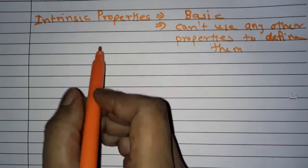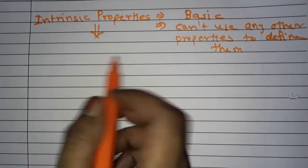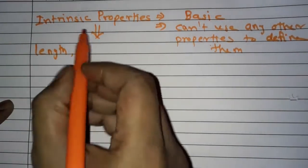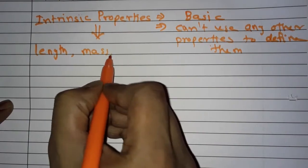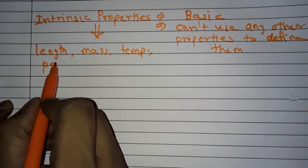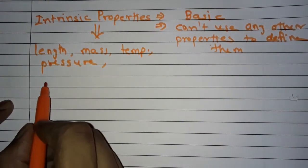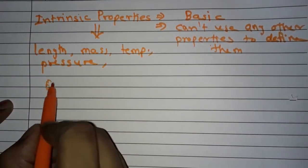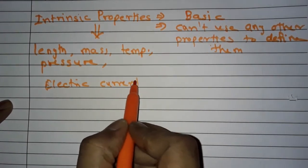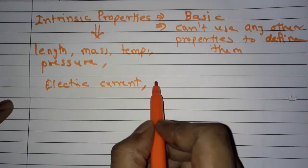Now here we will see the examples of intrinsic properties. The first is length, then mass, then temperature, then pressure, then electric current, then time, etc.